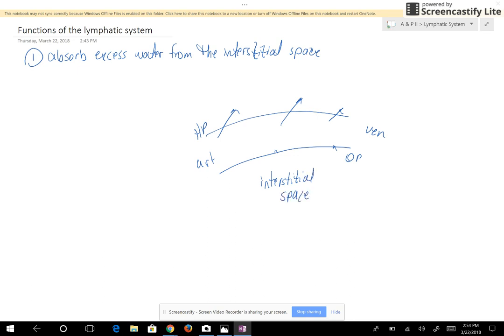So the net movement of water is in the interstitial space. The lymphatic system, the lymph capillaries, are going to take in this water.